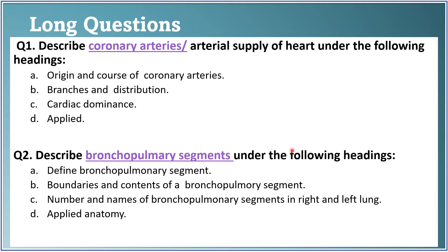The second long question is: describe bronchopulmonary segments. This is very important. First define what bronchopulmonary segments are, then boundaries and contents of a bronchopulmonary segment, how many are present in each lung, and the names of those segments in the right and left lung. For applied anatomy, mention how knowledge of bronchopulmonary segments helps in bronchoscopy, interpretation of bronchograms, drainage of abscess from a particular segment, and how the septa limit certain diseases.